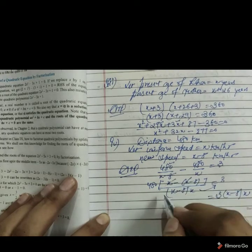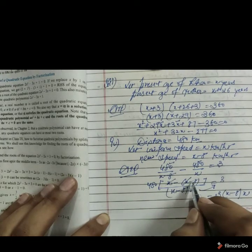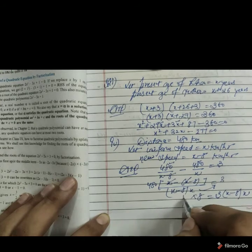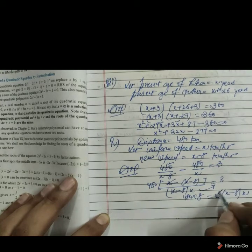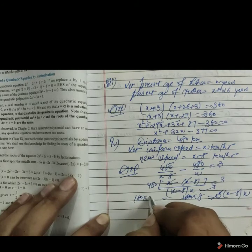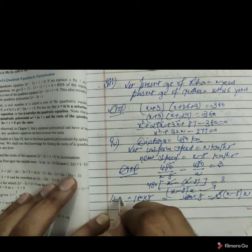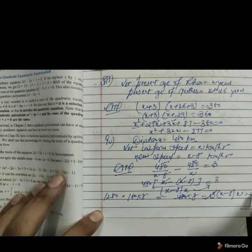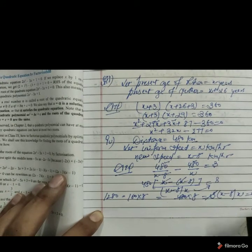Inside if we open the bracket x cancel out. It become minus minus plus. Means 8 multiply 480. Shifting 3, it become divide. So we get from here 160 multiply 8. Means 1280. On the right hand side we are getting here x square minus 8x.